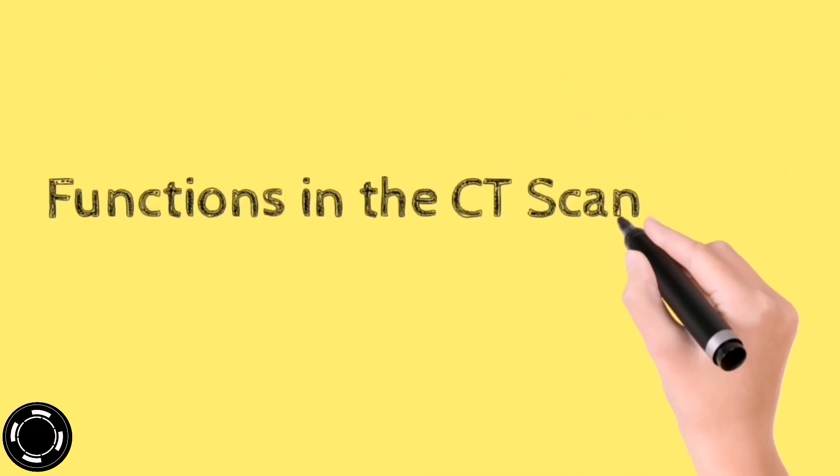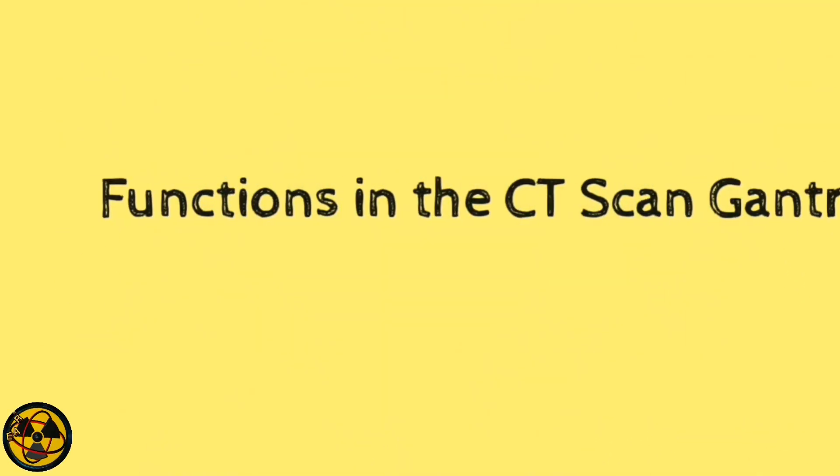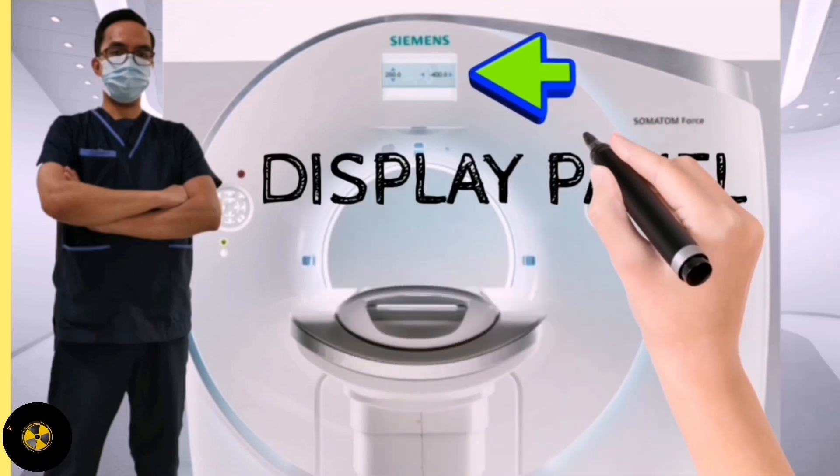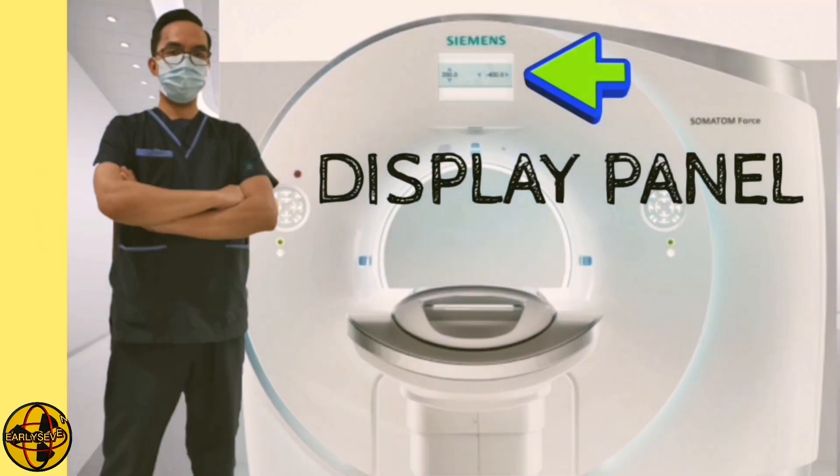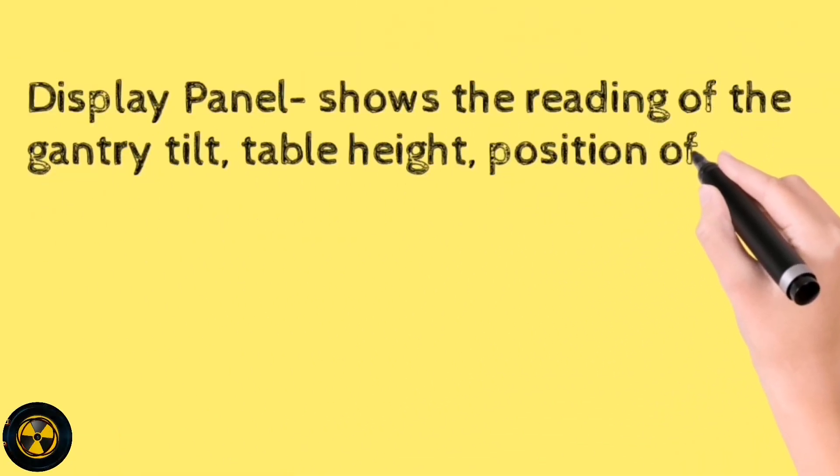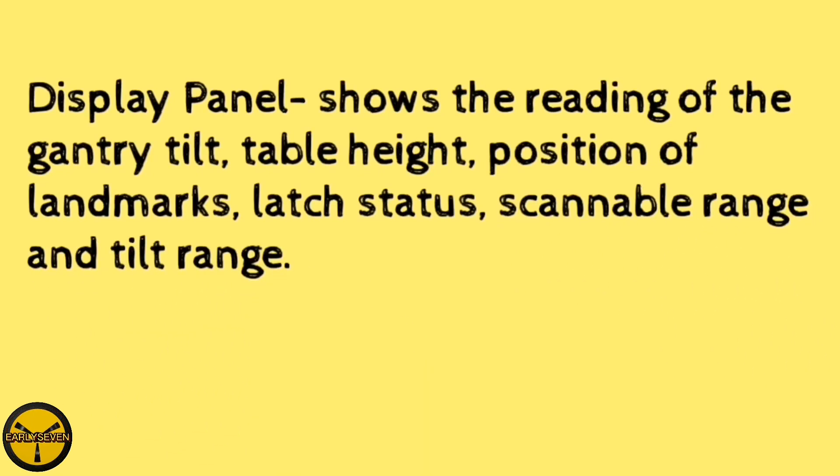What are the functions in the CT scan gantry? The first functions in the CT scan gantry is the display panel. The display panel shows the reading of the gantry tilt, table height, position of landmarks, latch status, scannable range and tilt range.